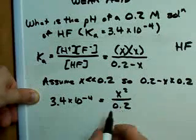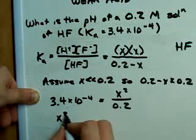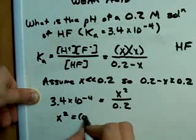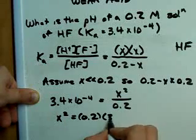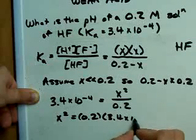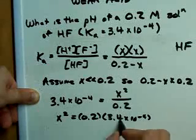Much more simplified, because now, if we cross-multiply, we get X squared is 0.2 times 3.4 times 10 to the minus 4, or that Ka that we had before.